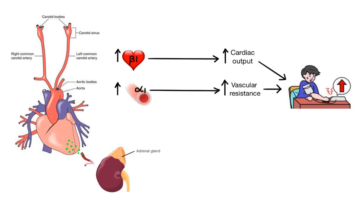Now another major system involved in blood pressure regulation is the renin-angiotensin-aldosterone system. We also have baroreceptors in the kidneys that respond to a fall in blood pressure or reduction of blood flow by releasing an enzyme called renin. Additionally, renin secretion is also stimulated by sympathetic activation of beta-1 receptors in the kidneys.